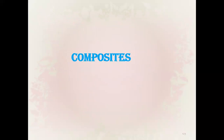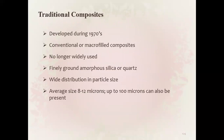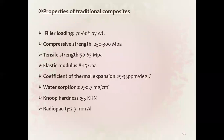Having discussed amalgam and GIC, we now move to composites. Traditional composites were developed in the 1970s. Conventional macrofill composites used finely ground amorphous silica with a wide particle size distribution — average size about 8 to 12 microns, up to 100 microns. Properties: filler loading 70 to 80 percent, compressive strength 250 to 300 MPa, tensile strength 50 to 65 MPa, elastic modulus 8 to 15 GPa, coefficient of thermal expansion 25 to 35 ppm/°C.